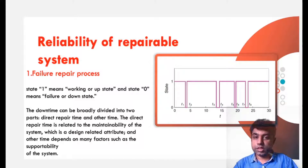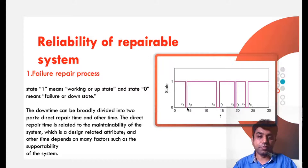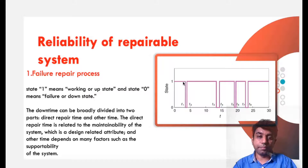In order to understand that, there are three characteristics we need to study. The first one is the failure repair process, in which we show a graphical representation of some time data. In the graph, state one means the product is in use and working okay. State zero means the product is not working — it is the downtime, the machine is out of service or a failure has occurred. For example, the product is in use for four minutes, then it fails for one minute, then it is restored back into use, then it fails again, then restored again. That plotting is called the failure repair process.